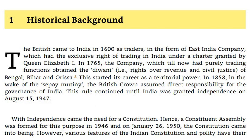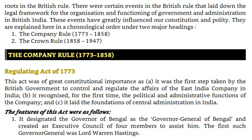With independence came the need for a constitution. Hence, a Constituent Assembly was formed for this purpose in 1946, and on January 26, 1950, the Constitution came into being. However, various features of the Indian Constitution and polity have their roots in British rule. There were certain events in British rule that laid down the legal framework for the organization and functioning of government and administration in British India. These events greatly influenced our Constitution and polity. They are explained in chronological order under two major headings: 1. The Company Rule, 1773–1858; and 2. The Crown Rule, 1858–1947.